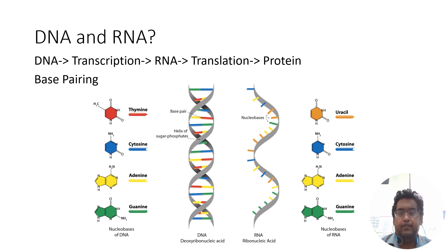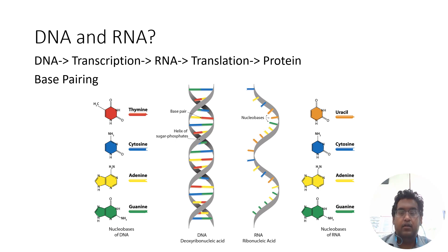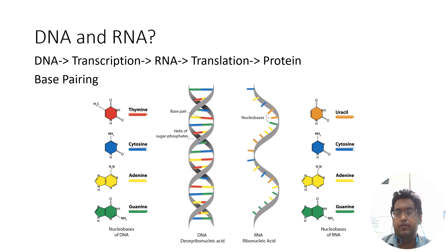RNA consists of uracil, cytosine, adenine, and guanine. That RNA, through the process of translation, then leads to protein production. These bases pair with one another from DNA to RNA, and those instructions lead to the formation of proteins.